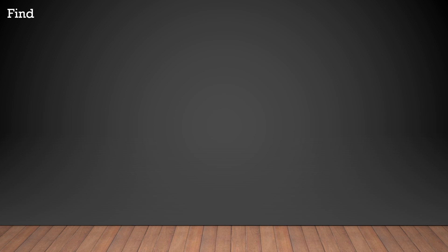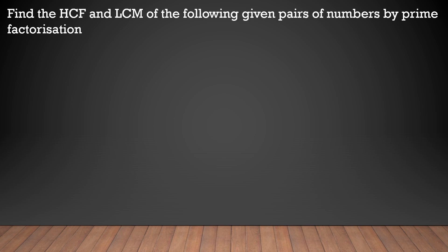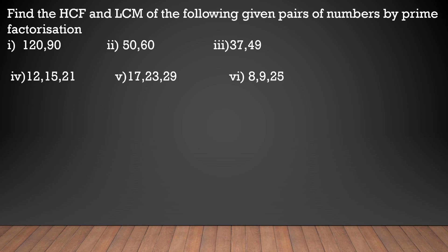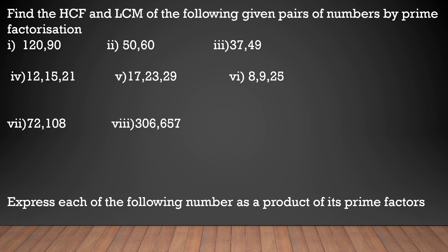This is the work for the alternate academic calendar second week. First, find the HCF and LCM for the following pairs of numbers by prime factorization: 120 & 90, 50 & 60, 37 & 49, 12, 15 & 21 — for three numbers, apply the same method. Also 17, 23 & 29; 9, 25; 72 & 108; and 306 & 657. Second, express each of the following numbers as a product of prime factors: 140, 156, 3825, 5005, and 7429.